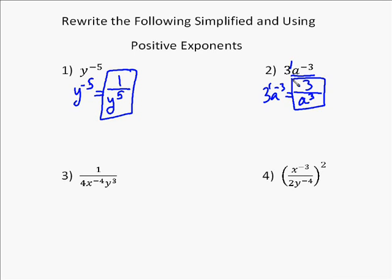In the third problem, again, there's only one negative exponent. Whenever you have a negative exponent, that negative exponent gets taken to the other side of the fraction—from the denominator to the numerator and numerator to the denominator. So the 4 and the y stay in the denominator, but the x to the fourth goes to the numerator because it is x to the negative fourth.